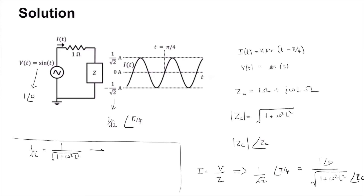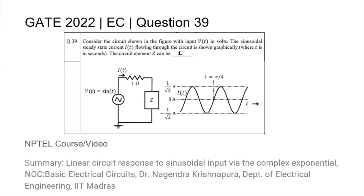Solving this for ω = 1 radian per second, we get L = 1 Henry. The excitation is sine(ωt), so ω = 1 rad/s. Therefore, the answer is L = 1H.